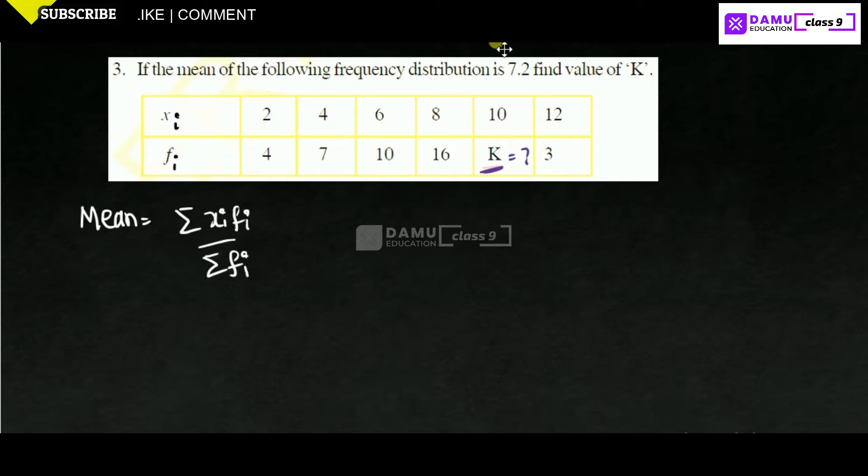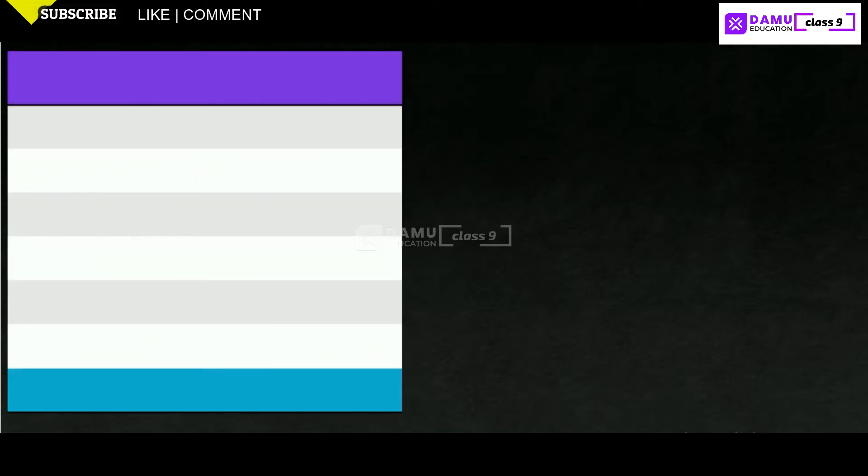Let us write all the values. Let us take these values, all will be here. What is this xi? Then fi. Then this is product of xi, fi.